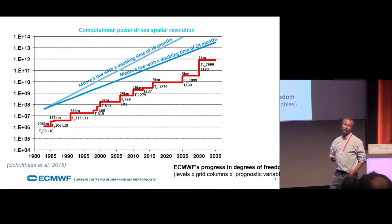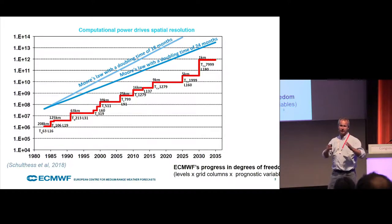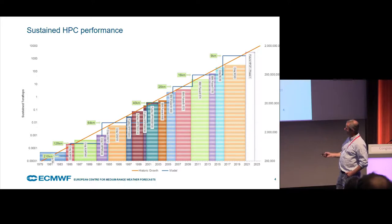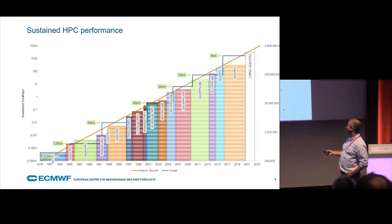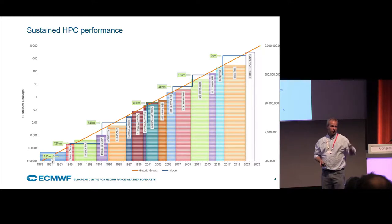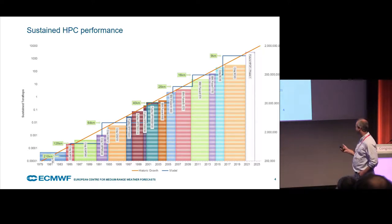This maps well to the growth in computing platforms at ECMWF over the years, starting with Cray machines — the Cray 1 — then going through a range of Crays, Fujitsus, IBMs, and currently our installation of a Cray XC40, which will be there until the end of 2020, pretty similar to CSCS plans.